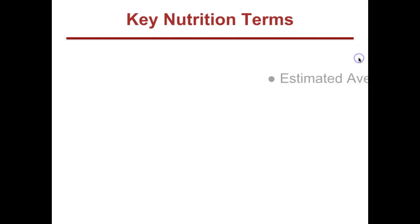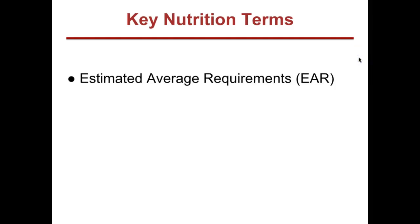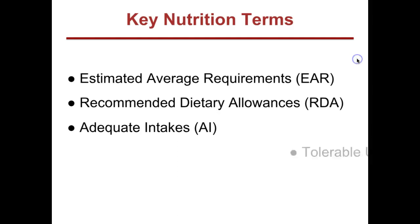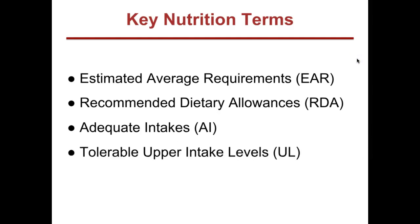Today, we're going to talk about some key nutrition terms. The terms we're going to talk about today are estimated average requirements, recommended dietary allowances, adequate intakes, and tolerable upper intake levels. Let's take a look at what those terms mean.